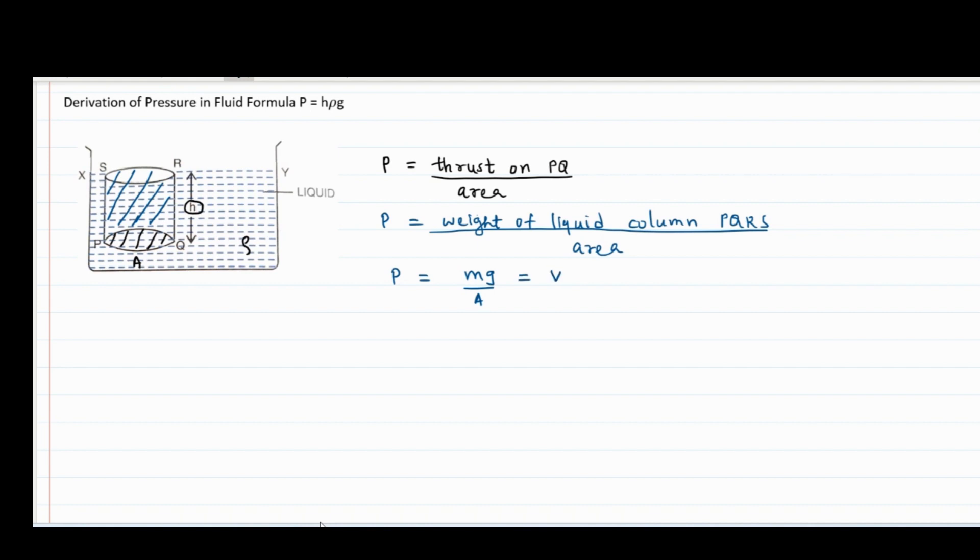But mass is equal to volume into density. So we can say pressure is V rho g upon area.